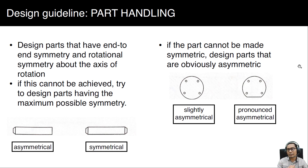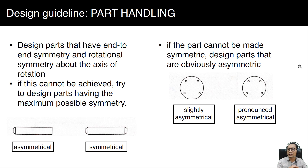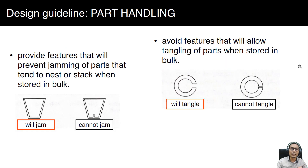If the part cannot be symmetric, design parts that are obviously asymmetric. There are two figures shown — one is slightly asymmetrical and the other is pronounced asymmetrical. Try to design a part tending toward a symmetrical shape for part handling purposes.